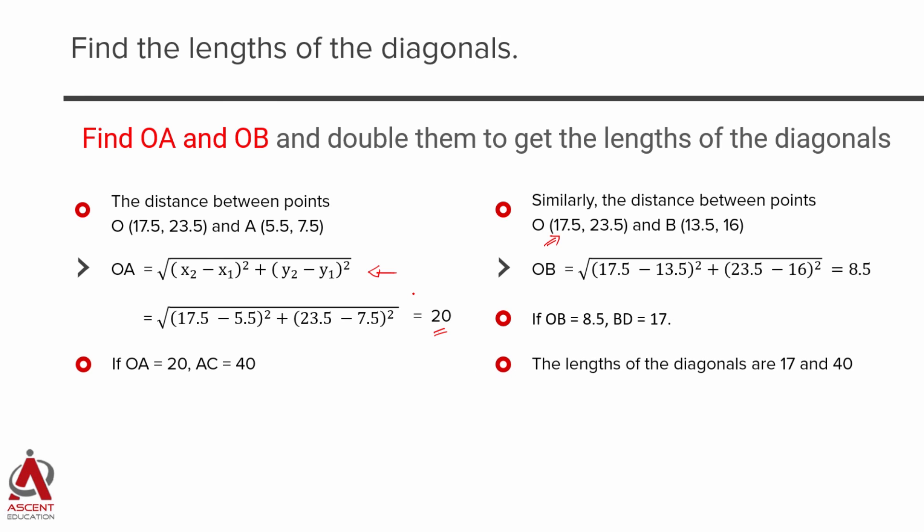We know the values of the diagonals. One is 40, the other is 17. Choice D is the correct answer.